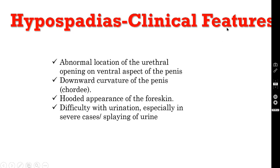What are the clinical features? The abnormal location of the urethral opening is quite obvious on the ventral aspect of the penis. Usually there will be a downward curvature of the penis — the proximal part — which is called chordee. There will also be a hooded appearance of the foreskin or prepuce, and difficulty with urination, especially in very severe cases, resulting in splaying of urine.